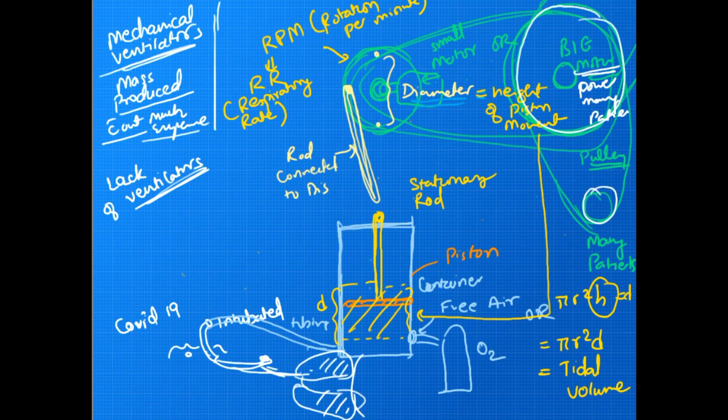Mass production of this thing has to be there, otherwise we are not going to tide over this crisis. Because the patients of COVID-19 are going to need mechanical ventilation for a longer period of time, maybe two weeks, maybe more than two weeks. But the problem here is for those 15 days, this mechanical ventilator will be blocked for that patient. No other person will be able to use it.